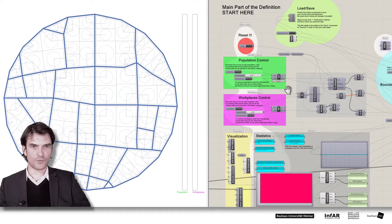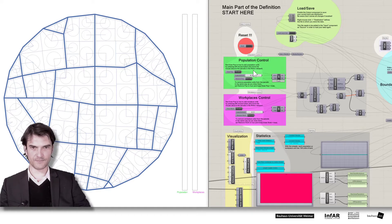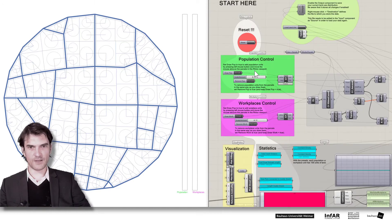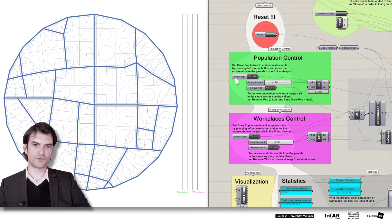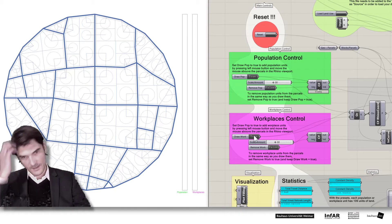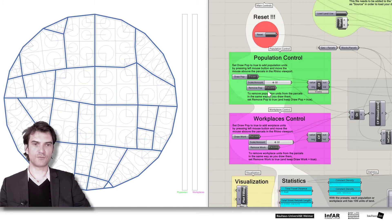But now let's start with the interesting part. How you can draw land uses, land use units. Let's start with the population. So that's probably the most important part of the definition, the population control and the workplace control. So what you see here, Boolean toggle, true or false. Means if it's true you can draw population units. And the same for workplaces. If it's true you can draw workplace units. But for now we already want to draw population units.